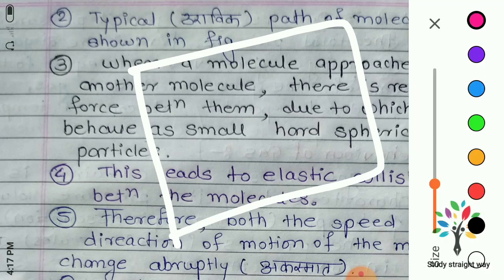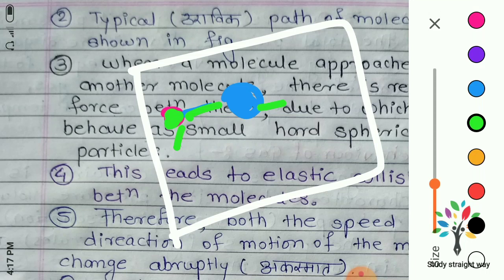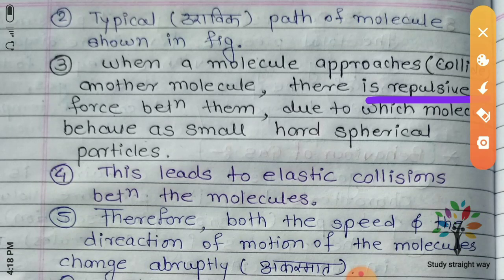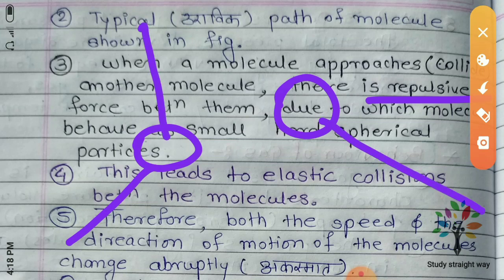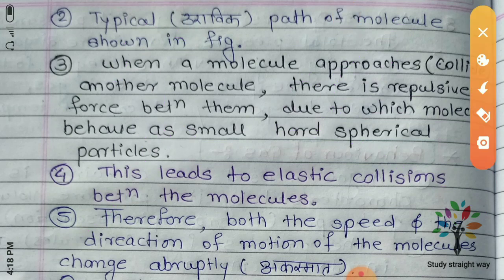If there is a container with a molecule, and this molecule collides with another molecule, then there is a collision. It is a hard sphere collision. When there is a collision, they will rebound. The repulsive force means it is repulsive. If there is a change in direction, then we will change the motion — because motion is a vector, it has both magnitude and direction. So, behave as a small hard sphere. This leads to elastic collision between the molecules. In elastic collision, the direction of motion of the molecule will change.